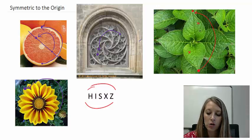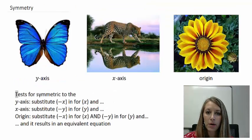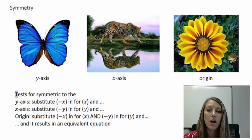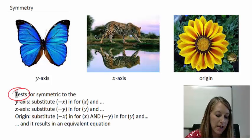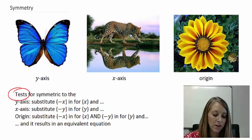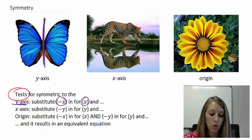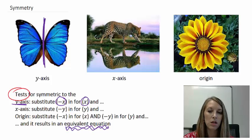How does this help us with algebra? We want to determine, if we're trying to graph something and they give us the function, whether it's symmetric or not. If it is, that helps us graph the other half of our graph — if we can draw one half and we know it's symmetric, we know the exact opposite half without doing any extra work or plotting any extra ordered pairs. To test for symmetry to the y-axis, we substitute a negative x in for the original x in the equation. If we get an equivalent equation, then it is symmetric to the y-axis.